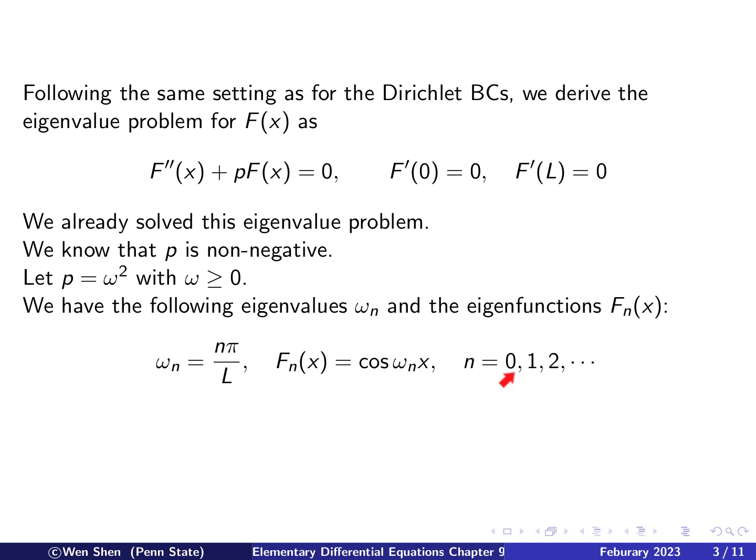For n equal 0, 1, 2. So remember, there is 0 here. So that means 0 is an eigenvalue and the constant function is an eigenfunction.